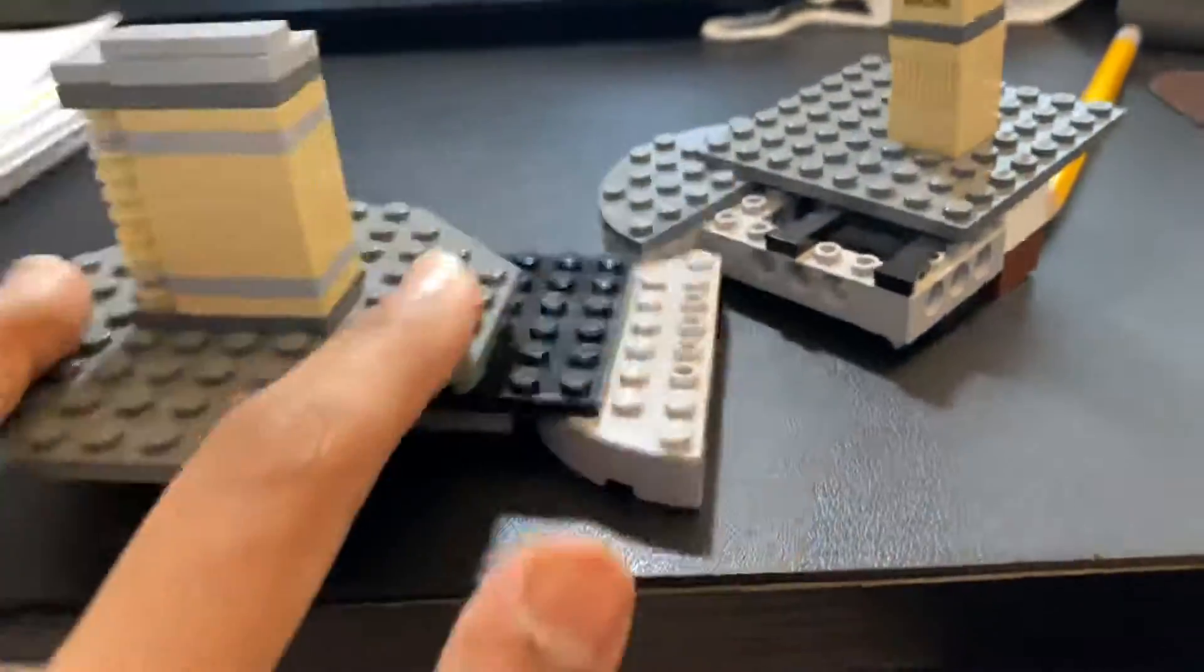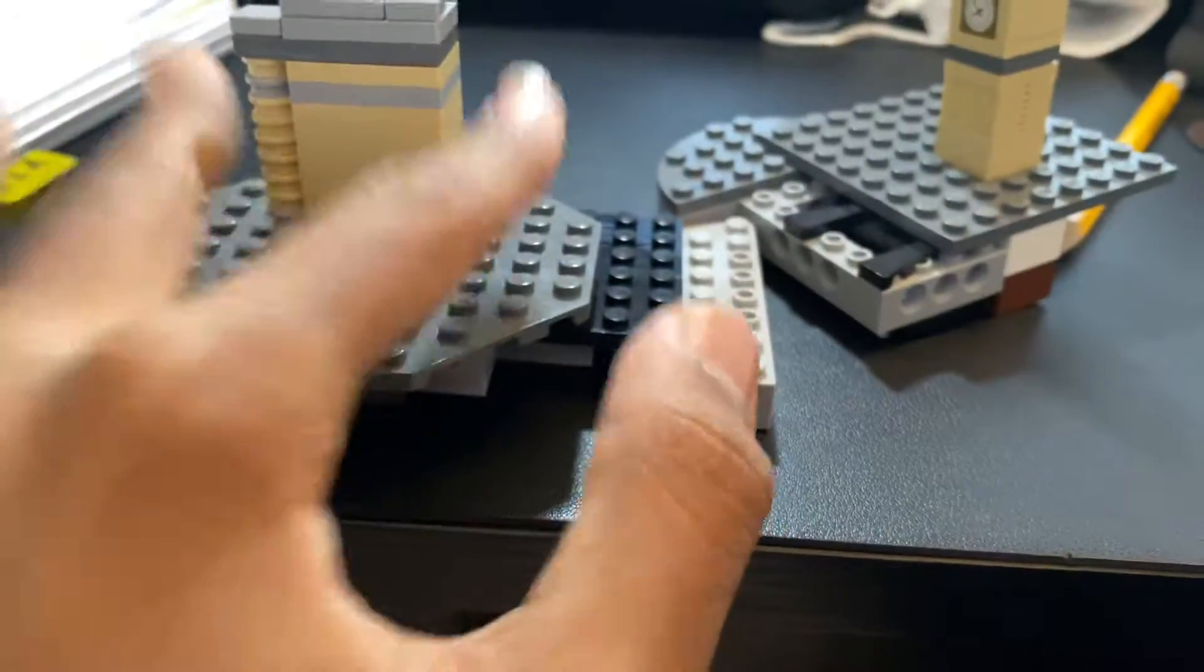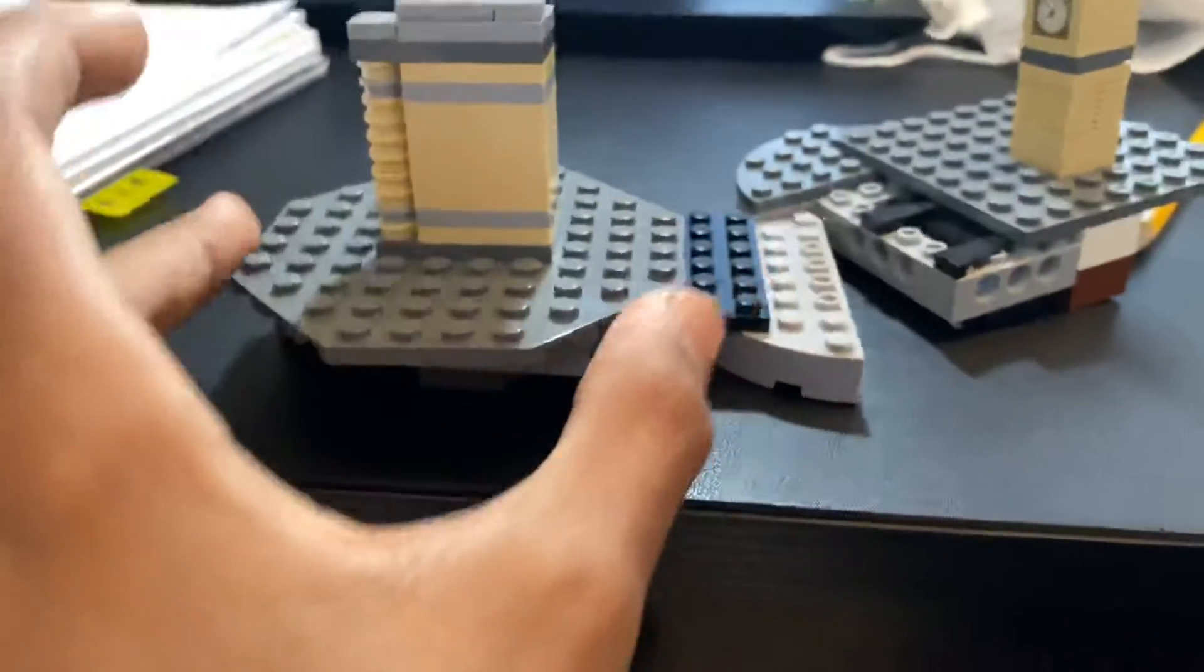And then here, this represents the Earth's crust, and here represents the buildings on the crust. This is theoretically a continent.